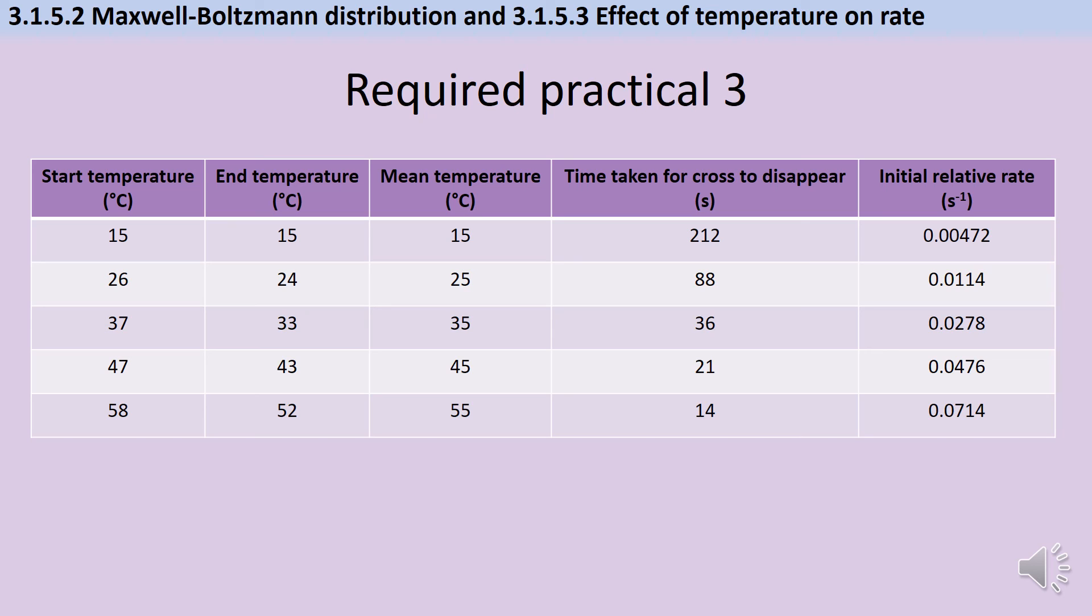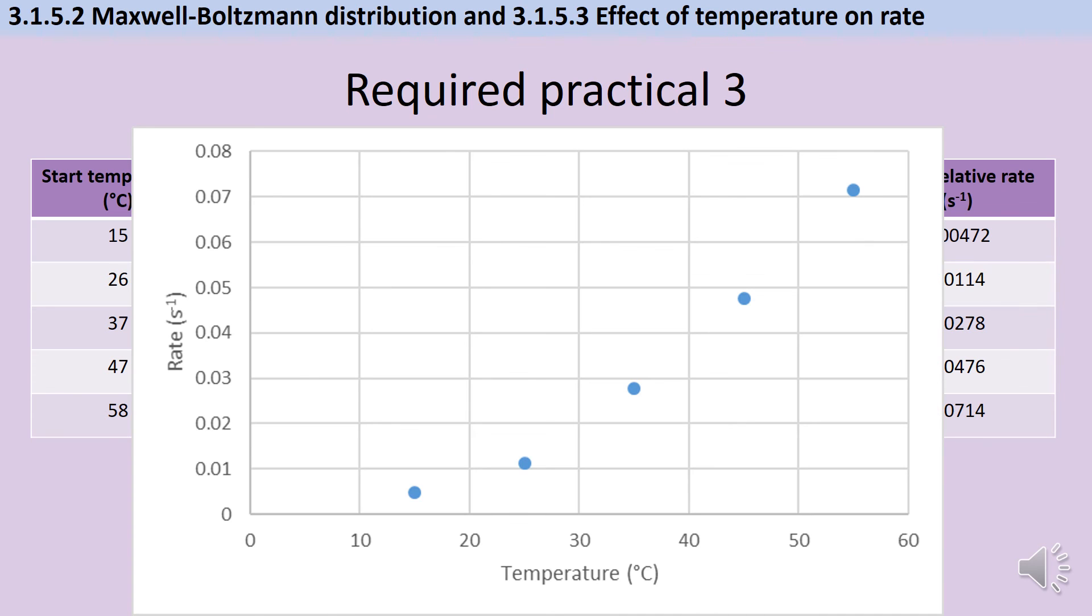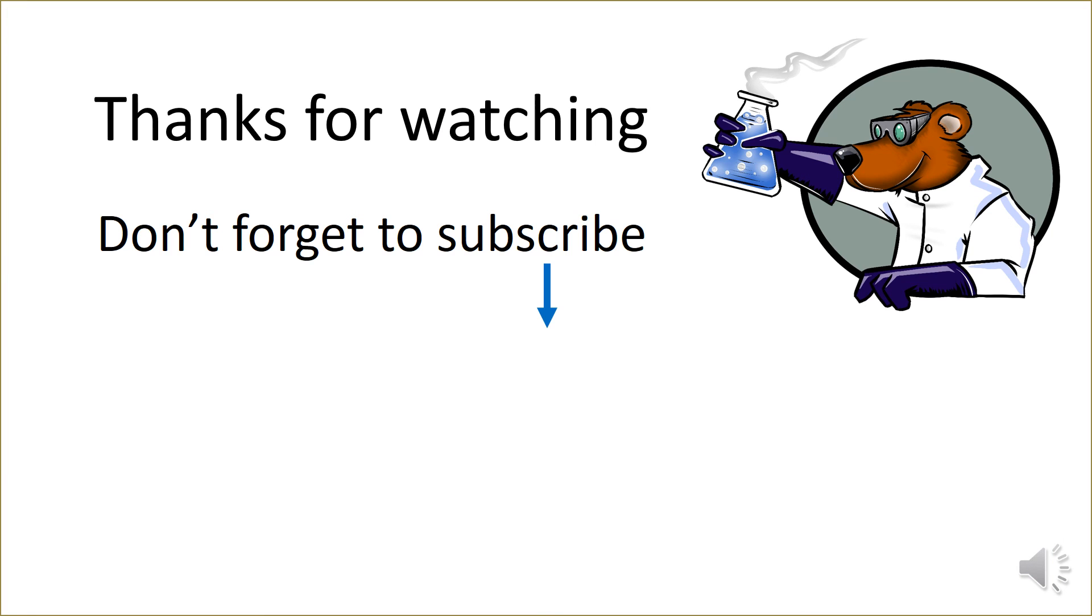So for each temperature we've got a time taken for the cross to disappear and then because the amount of sulfur that's produced each time before the cross disappears is the same we can use one divided by time as a sort of a surrogate, a way of working out the initial relative rate and that gives me my numbers here which are all three significant figures. If I plot those onto a graph I get something that looks a bit like this, it's not a perfect straight line relationship but it's actually pretty good going.